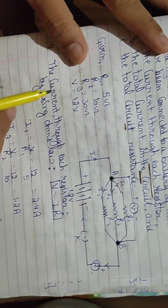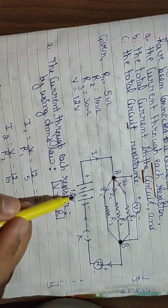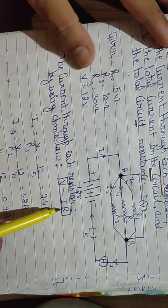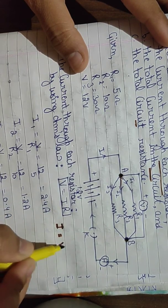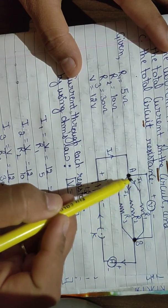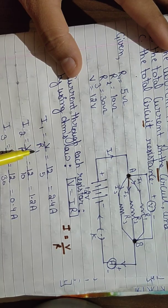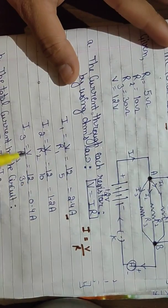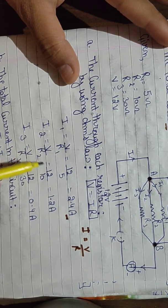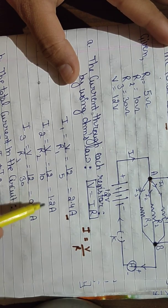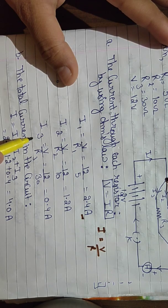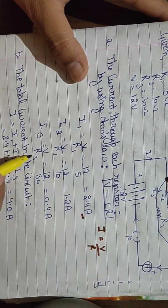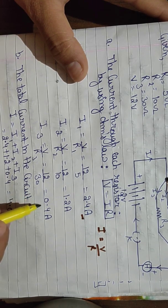For Part A — current through each resistor — since V is constant and resistance values are given, we use Ohm's law: I = V/R. I1 = V/R1 = 12/5 = 2.4 ampere. I2 = V/R2 = 12/10 = 1.2 ampere. I3 = V/R3 = 12/30 = 0.4 ampere. Ampere is the SI unit of current.